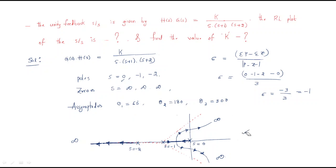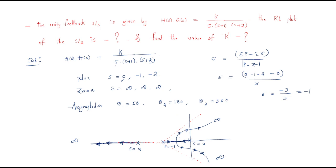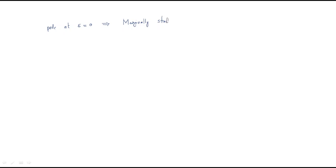The root locus is now complete. For the second question — finding the value of K — we observe that since there is a pole at s = 0 in the transfer function, the system is a marginally stable system. Using that concept, we find K at the imaginary axis.